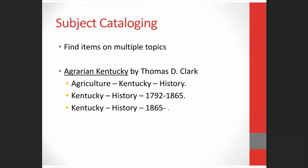Subject headings also help people find materials that may be about multiple topics. For instance, we have the book Agrarian Kentucky, which might be of interest to people who want information about agriculture, but it may also interest people who want information about Kentucky history. By putting these different subject headings in a catalog record, you help people interested in various aspects of the book find it. So our book has an agriculture heading, but it also has headings to show that it covers Kentucky history in certain time periods, and using a subject search in the catalog, both groups of people would be able to find this book.